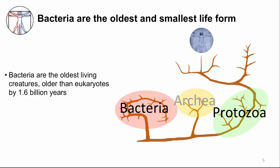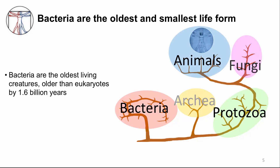They arose before the simplest single-celled eukaryotic cells — protozoa — began populating the earth. It took animals another billion years to appear. Thus, bacteria have been evolving sophisticated strategies to survive, colonize, and infect us for much longer than we've existed.